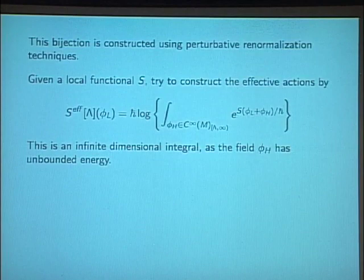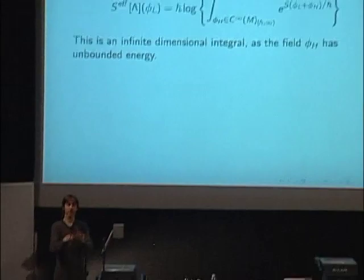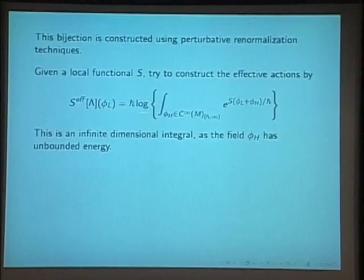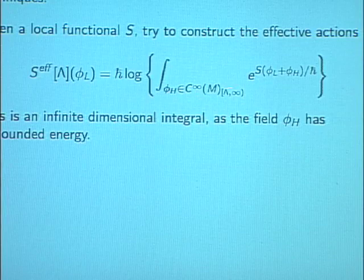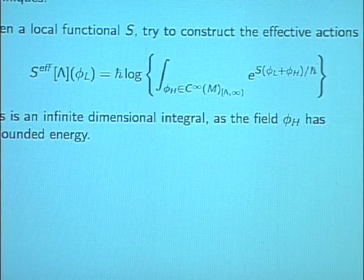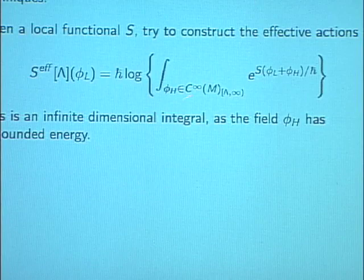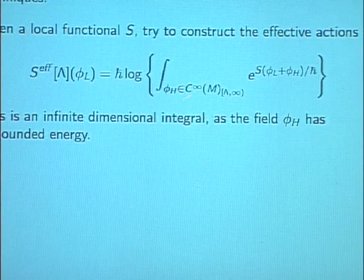Suppose you give me a local functional — how do I construct the quantum field theory, i.e., the low energy effective actions? Well, the local functional, being a local point-like object, plays the role of the effective action at energy infinity, whatever that means. So we try to define the effective action at energy lambda by a functional integral — a renormalization group type integral over all fields whose energy is between lambda and infinity. Because we are not bounding the energy above, this is an infinite dimensional vector space, so the functional integral just doesn't make sense. We can write down its Feynman graph expansion, but it diverges.